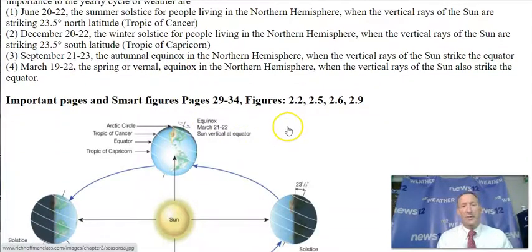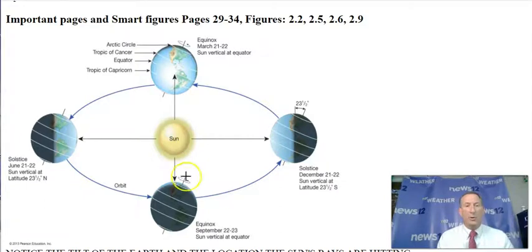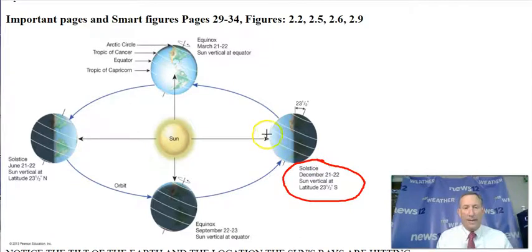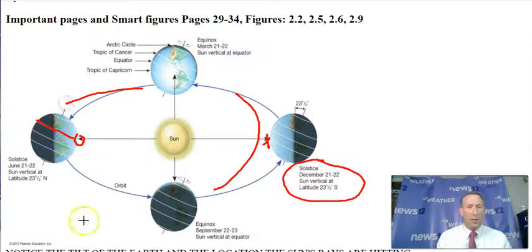Some very important pages you need to look at are the smart figures on pages 23 and 29 through 34 — figures 2.2, 2.5, 2.6, and 2.9. These figures show you where the sun's rays are hitting. For December, the sun's direct rays are hitting down in the southern hemisphere, while during our summer, the sun's direct rays are hitting in the northern hemisphere. You can see the revolution and the rotation, and how the tilt of the earth changes as it moves around the sun.